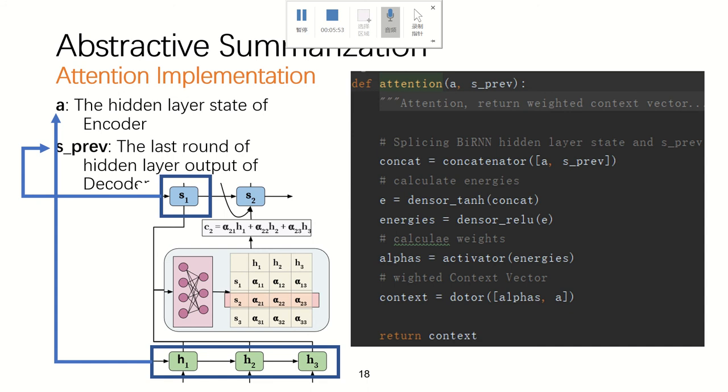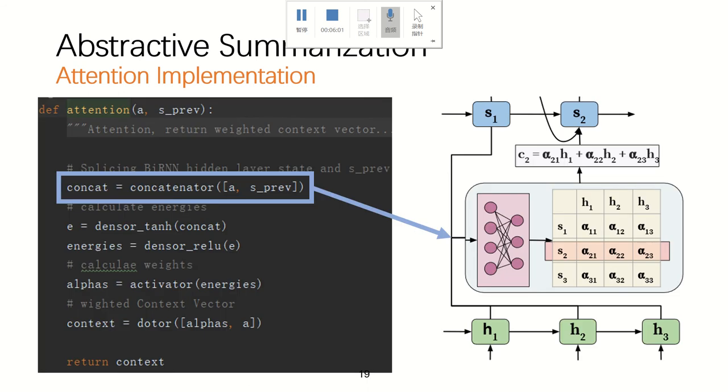The S prime is the last round of hidden layer of output of decoder. And the first step is we need to concatenate the S and H in the picture. And we can get the concat vector.